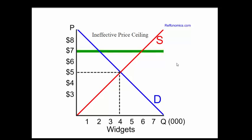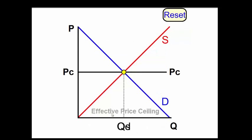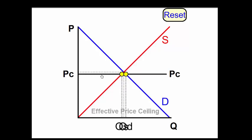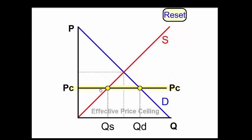However, if the government sets a price below the equilibrium price, this is considered to be an effective price ceiling. An effective price ceiling is a price that is set below the equilibrium price. If the price is set by the government below the equilibrium price, the quantity demanded is greater than the quantity supplied at this price ceiling. This causes a shortage in the marketplace.